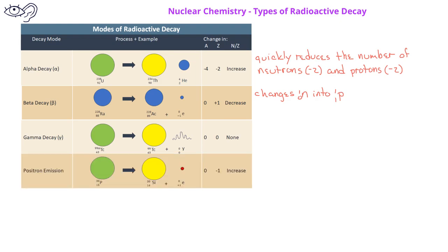Another type of emission is positron emission. A positron is a particle that is like an electron, except it has a positive charge. For example, phosphorus-30 can undergo positron emission to produce silicon-30. Positron emission changes a proton into a neutron in the nucleus. The daughter nuclide has the same mass number, but the atomic number decreases by 1.